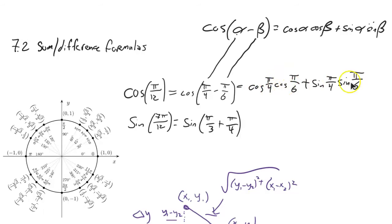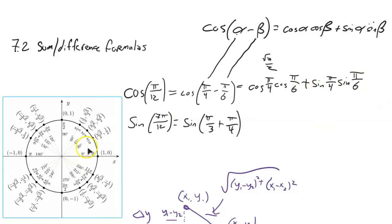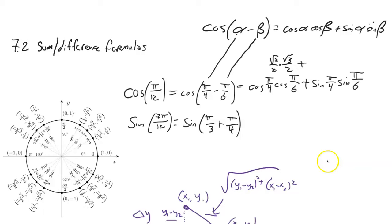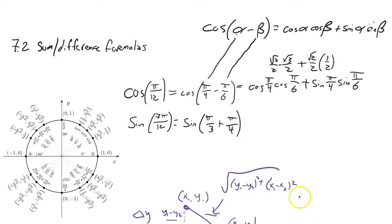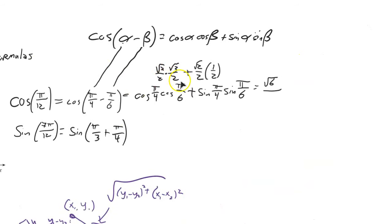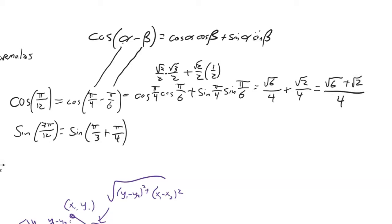Now I know these values. Cosine of pi over 4 is root 2 over 2. Cosine of pi over 6 is root 3 over 2. Sine of pi over 4 is root 2 over 2. Sine of pi over 6 is 1/2. Root 2 times root 3 is root 6 over 4, and root 2 times 1 is root 2 over 4. Same denominator, so the exact value is (root 6 + root 2) over 4.